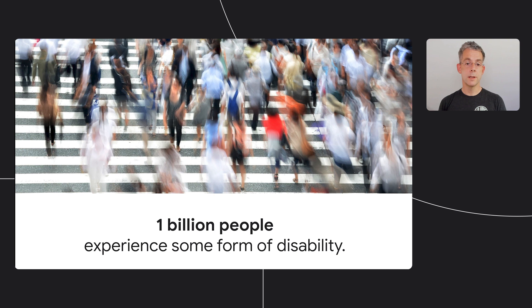Thanks to advances in machine learning, today we can help people in ways that just weren't possible a few years ago. Today we'll show you a few examples of this help, tell you how we're thinking about accessibility and machine learning, and give you a few hints for how you might apply it in your own apps.